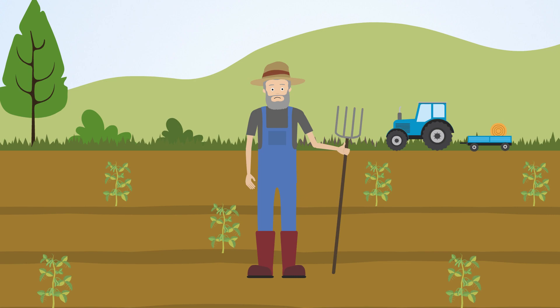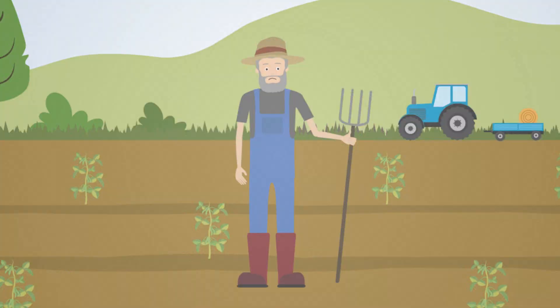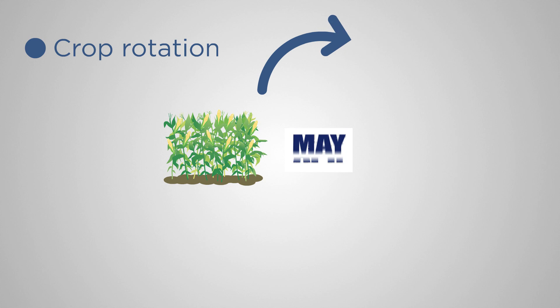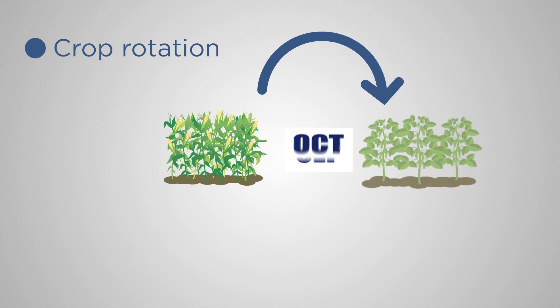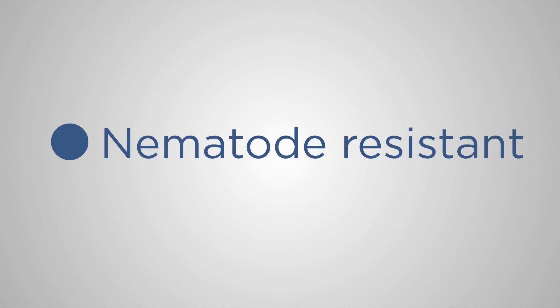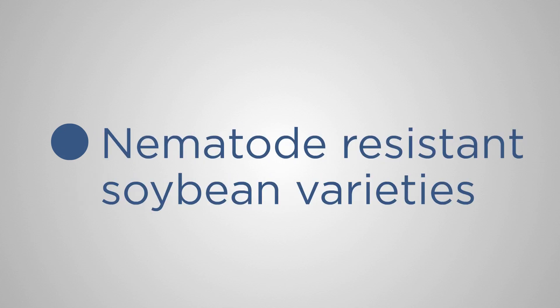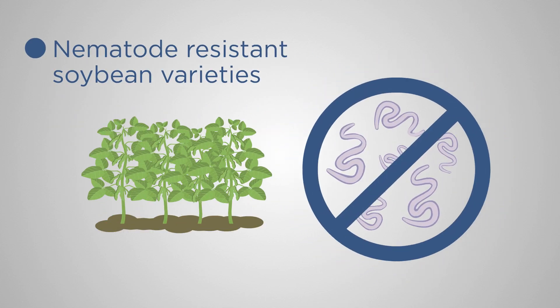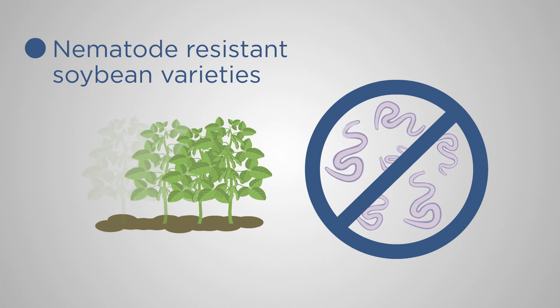Control methods are limited. These strategies include crop rotation — planting crops that are not hosts to root-knot. However, the southern root-knot nematode has a broad host range, limiting choices. Nematode-resistant soybean varieties are another option; however, the number of high-yield-producing resistant varieties is also limited.